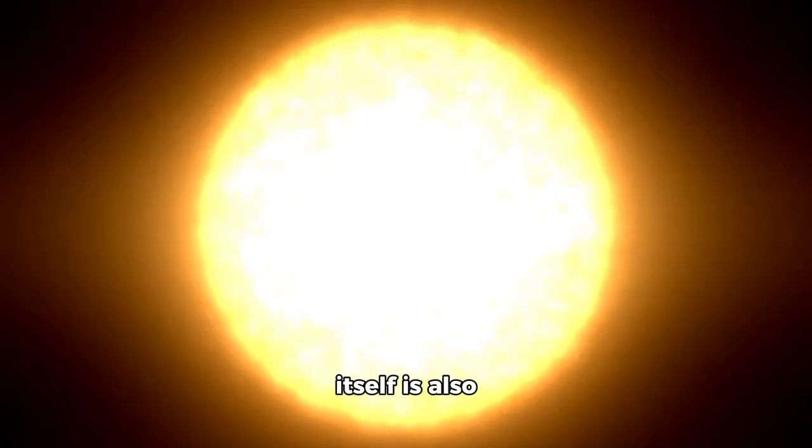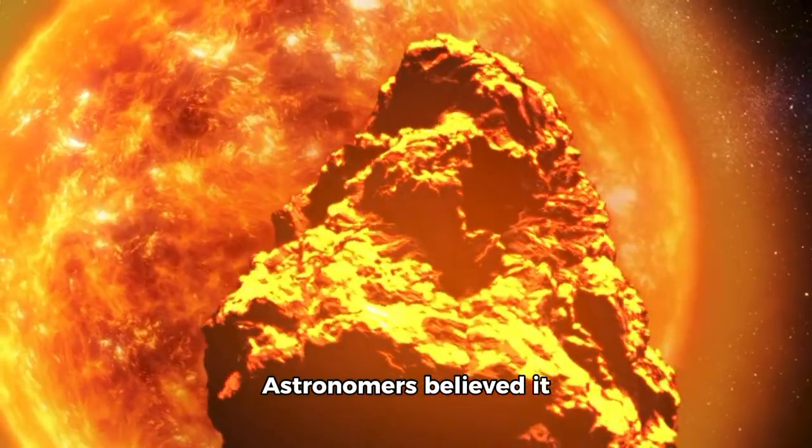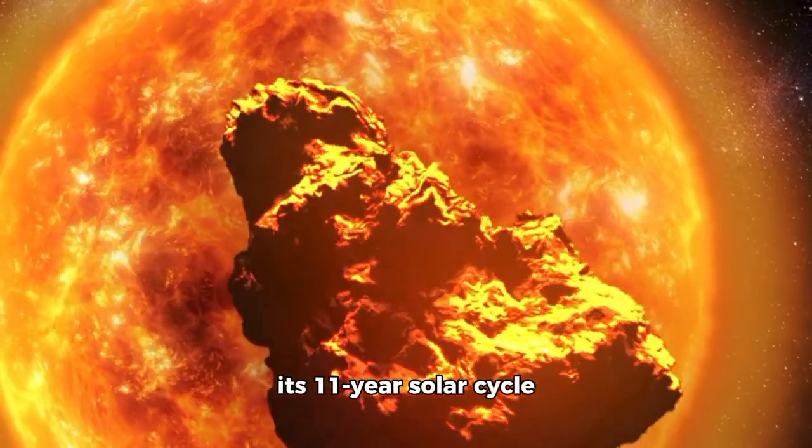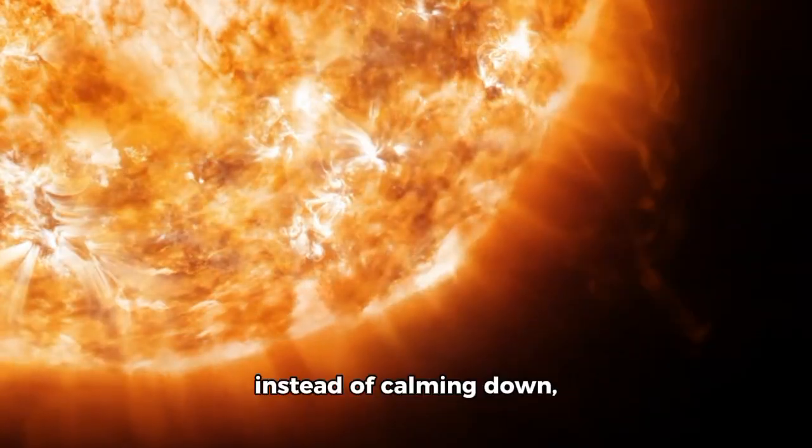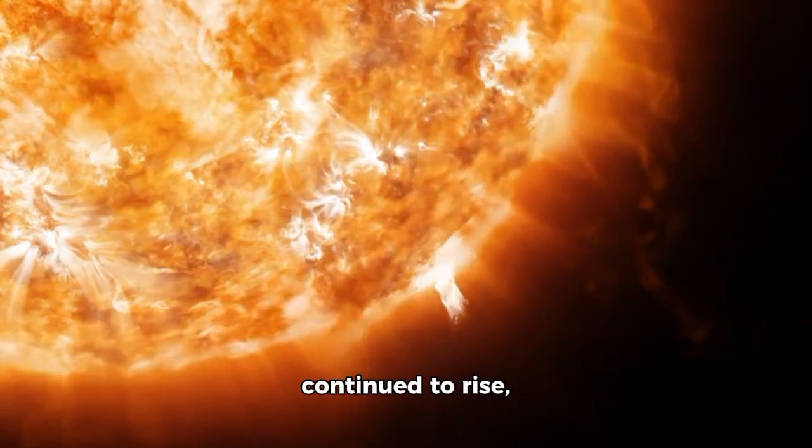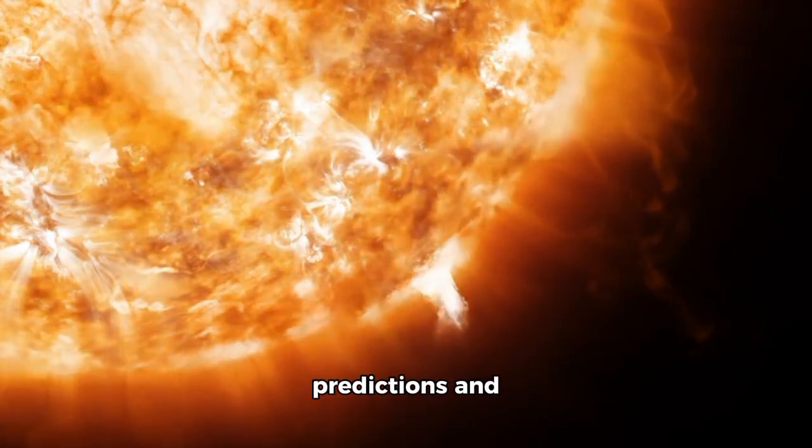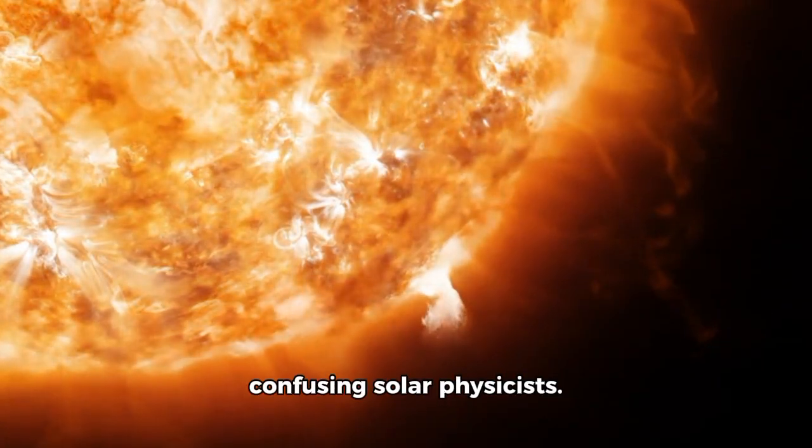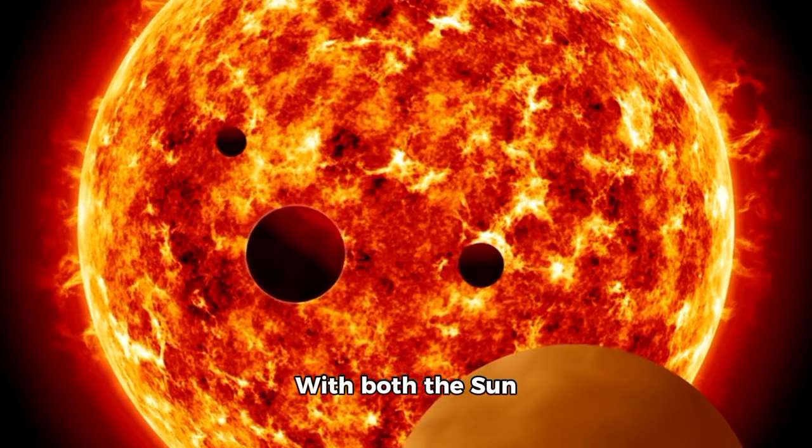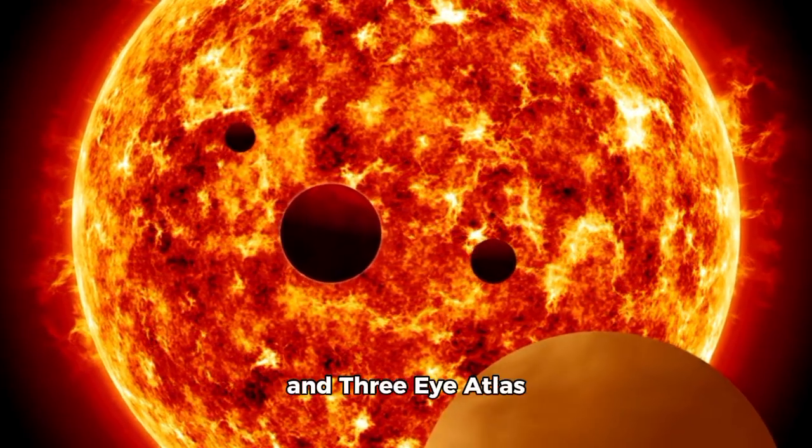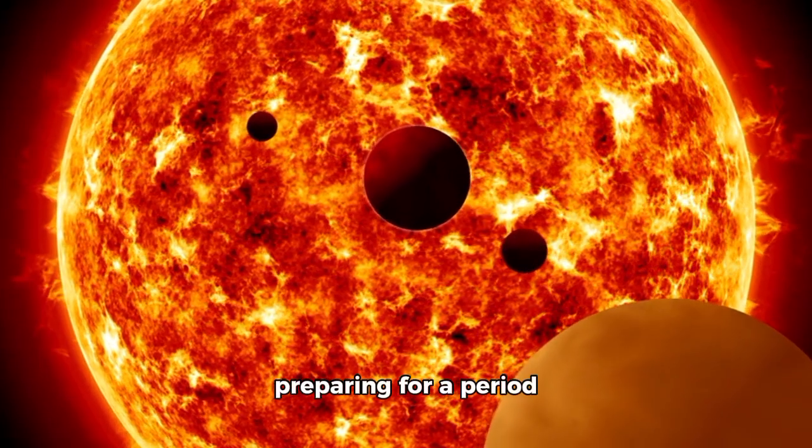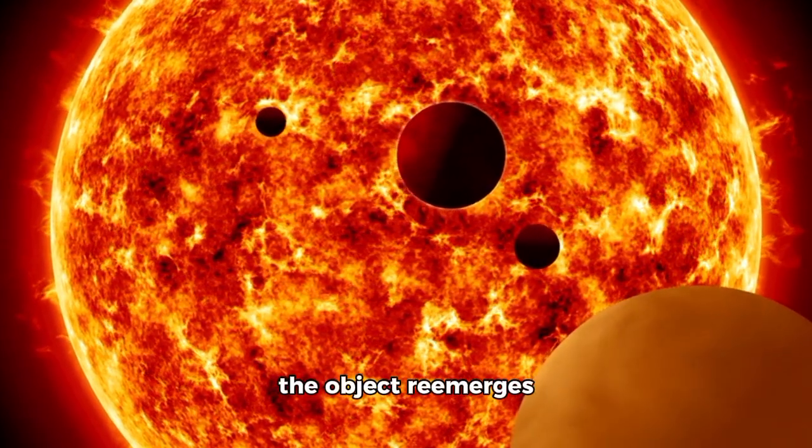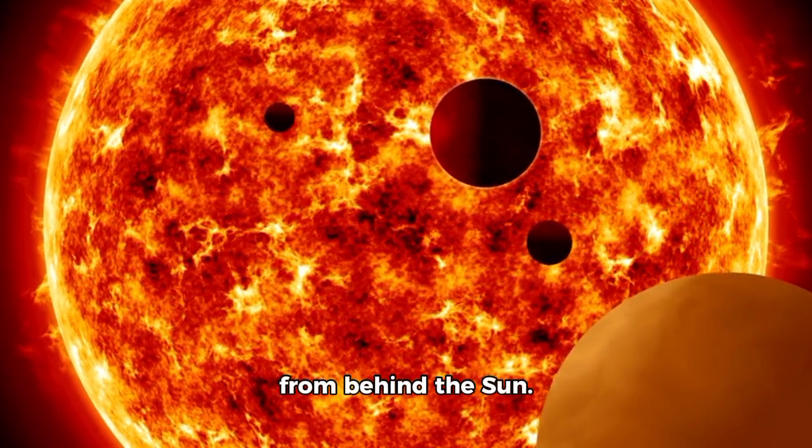Interestingly, the Sun itself is also behaving unexpectedly. Astronomers believed it would reach the peak of its 11-year solar cycle in late 2024, but instead of calming down, solar activity has continued to rise, defying earlier predictions and confusing solar physicists. With both the Sun behaving unpredictably and 3-Eye Atlas exhibiting mysterious features, scientists are preparing for a period of close scrutiny once the object re-emerges from behind the Sun.